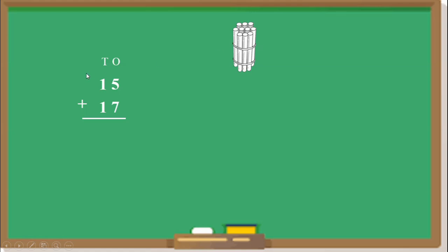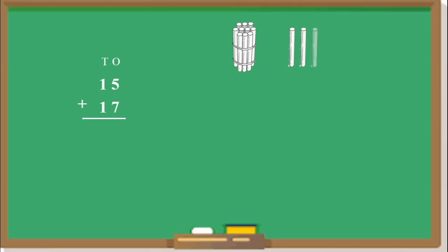1 bundle means 1 ten. For the number 15, at the 10's place there is 1, so we take 1 bundle. At the 1's place there is 5, so we take 5 loose sticks: 1, 2, 3, 4, and 5.